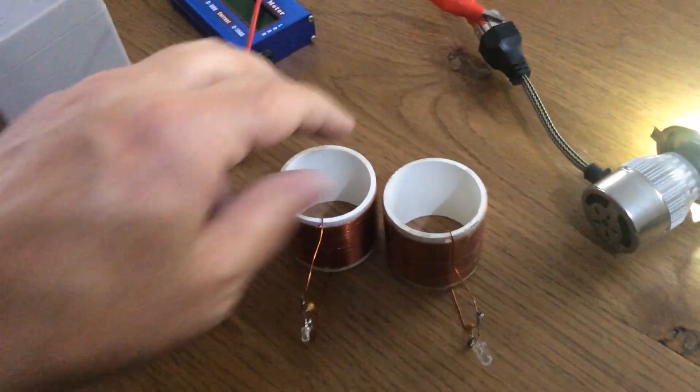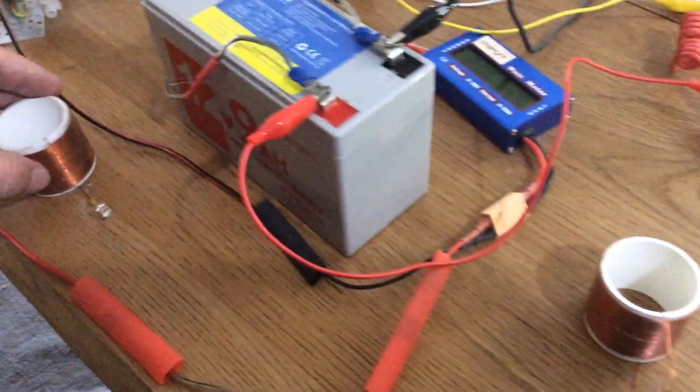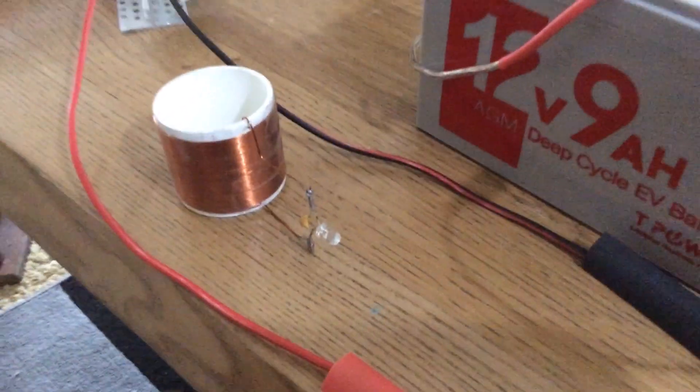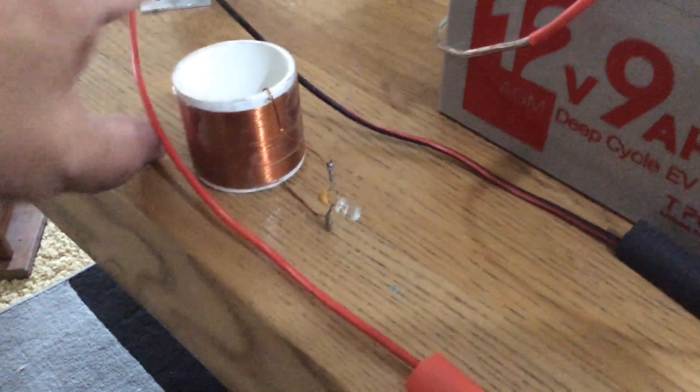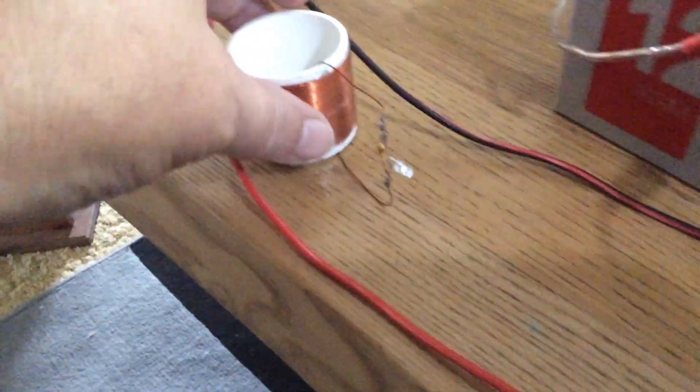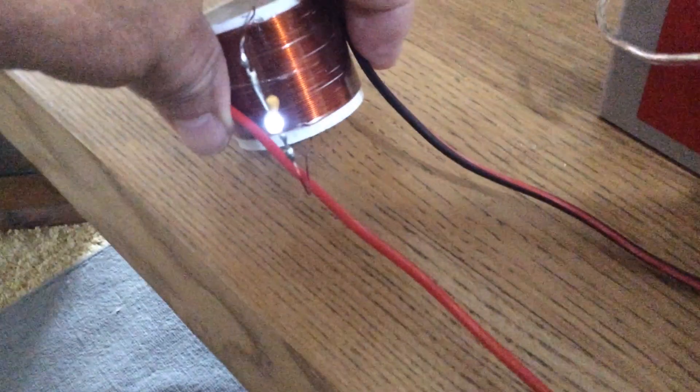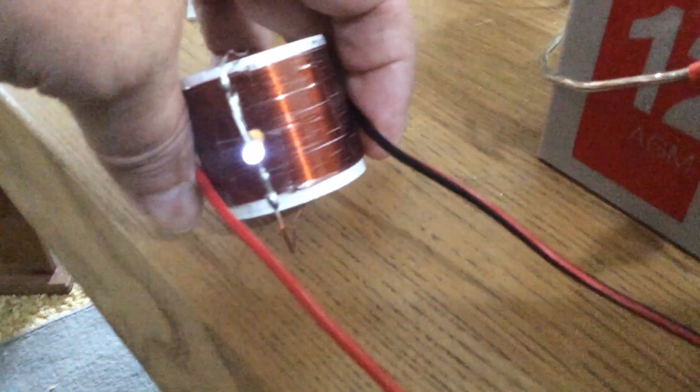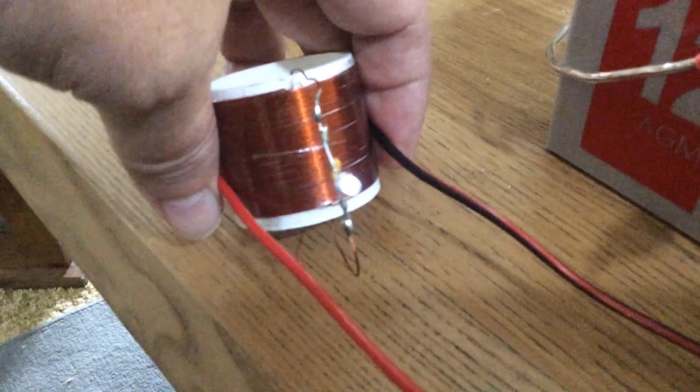So if I place this coil here in between the positive and the negative line that come from the battery, you can see there's nothing abnormal there. Whereas if I was to use this coil, we can see that by placing it between positive and negative, those battery wires, it will actually light up that light. So now this coil is taking power from just being in between those two lines.